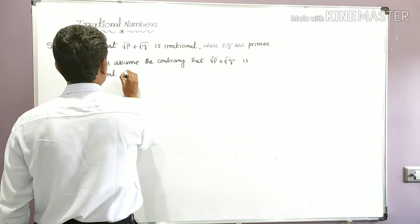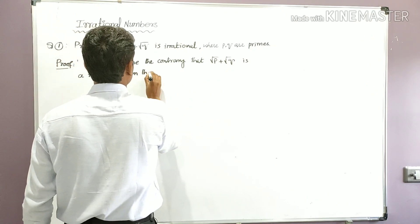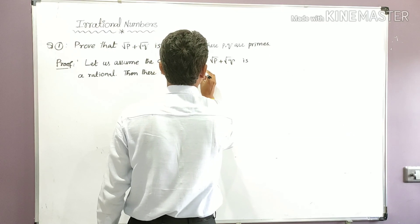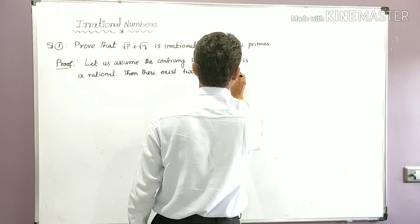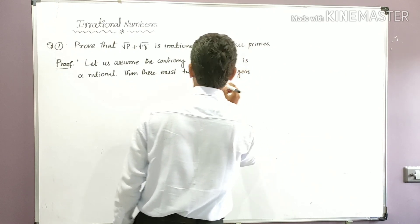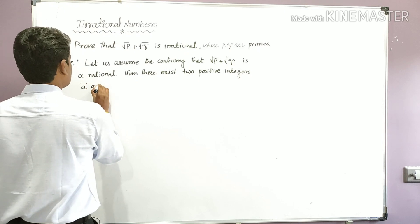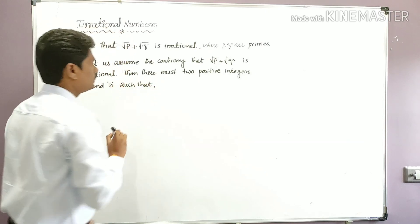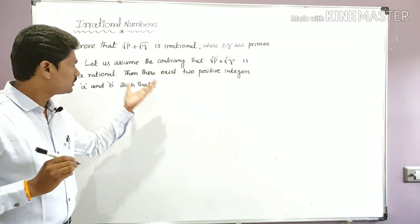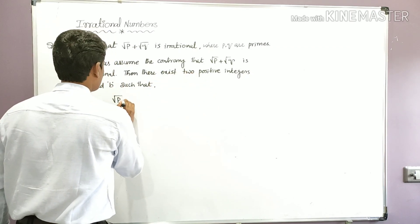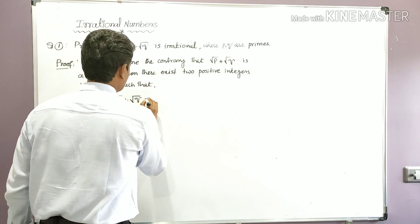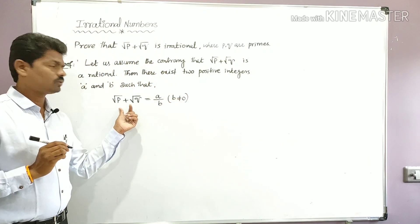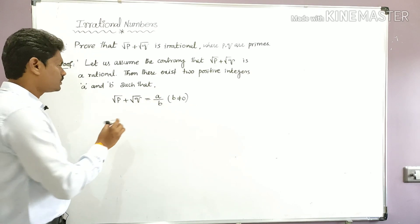Then there exist two positive integers a and b such that √p + √q = a/b, where b is not equal to 0. So √p + √q = a/b, with the condition b ≠ 0.